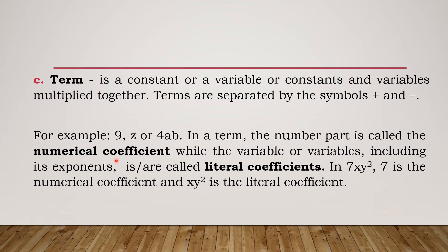In a term, the number part is called the numerical coefficient. In 4ab, the numerical coefficient is 4 — it is written before the variables. The variables including their exponents are called literal coefficients. For example, in 7xy², the numerical coefficient is 7 and xy² is the literal coefficient. Note that the literal coefficient includes not just the variables but also their exponents.